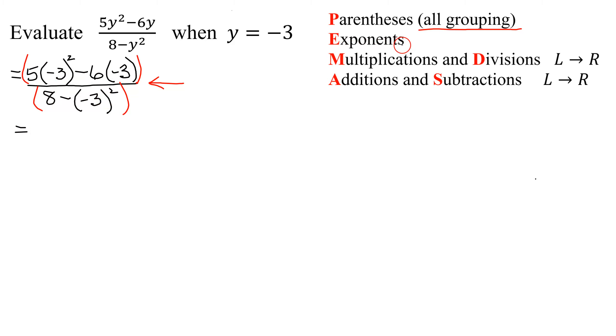Next, are there any exponents? Yes, there's one here and one here. So my numerator is going to be 5 times negative 3 all squared. Remember, negative 3 all squared means negative 3 times negative 3. Negative times a negative is a positive. 3 times 3 is 9. So I'm going to get 5 times 9 minus 6 times negative 3, all divided by 8 minus, we already know negative 3 squared is 9.